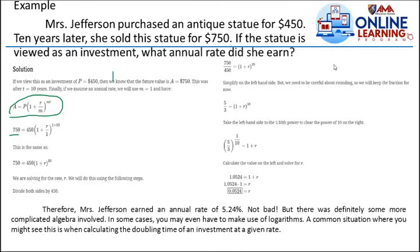So she bought it for this amount, then sold it for $750. That means after 10 years, she earned $300. From that $300, what's the interest rate that gave her a total of $750? That's what we're looking for. Solution?